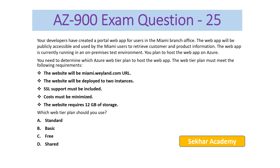AZ-900 Exam Question number 25. Your developers have created a portal web app for users in the Miami branch office. The web app will be publicly accessible and used by Miami users to retrieve customer and product information. It is currently running in an on-premises test environment. You plan to host the web app on Azure. The Web Tier Plan must meet the following requirements: the website will use the Miami.Wayland.com URL; it will be deployed to two instances; SSL support must be included; cost must be minimized; and the website requires 12 GB of storage.